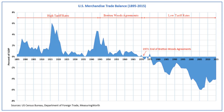Thus, the U.S. dollar took over the role that gold had played under the gold standard in the international financial system. Meanwhile, to bolster confidence in the dollar, the U.S. agreed separately to link the dollar to gold at the rate of $35 per ounce. At this rate, foreign governments and central banks could exchange dollars for gold. Bretton Woods established a system of payments based on the dollar, which defined all currencies in relation to the dollar, itself convertible into gold, and above all, as good as gold for trade. U.S. currency was now effectively the world currency, the standard to which every other currency was pegged. As the world's key currency, most international transactions were denominated in U.S. dollars.